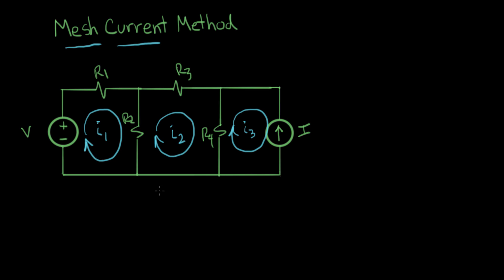These mesh currents are kind of interesting. In some sense they exist, but it doesn't seem like they really do. How could these currents be flowing around in circles? Let's look a little closely. It's pretty clear that the current flowing through our voltage source V is equal to mesh current I1.